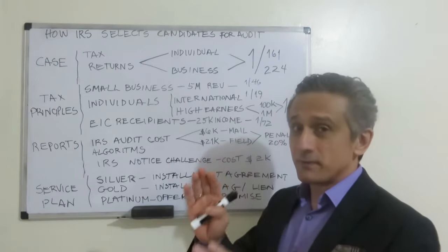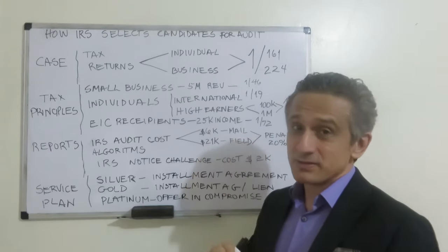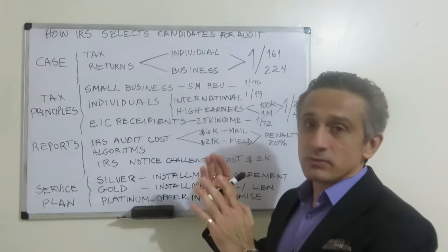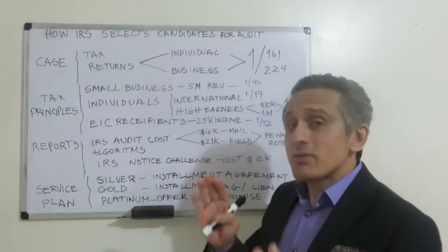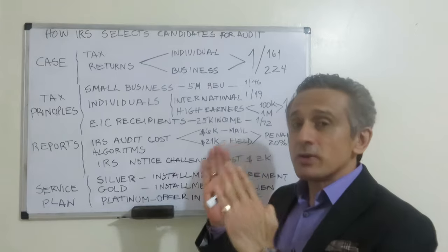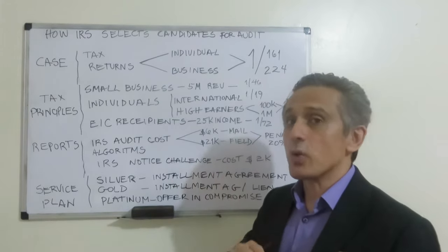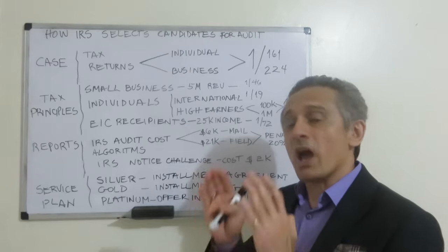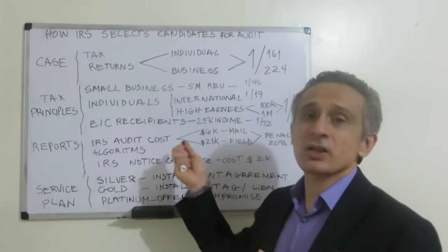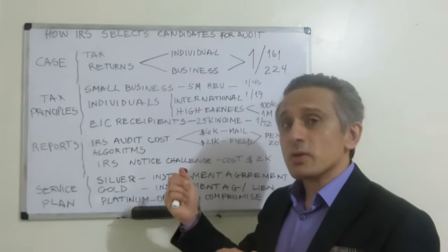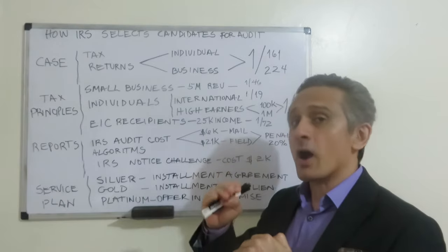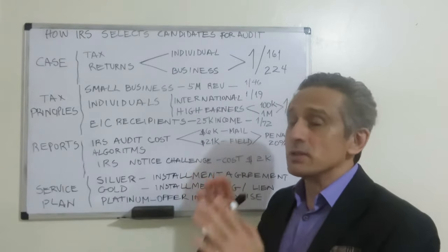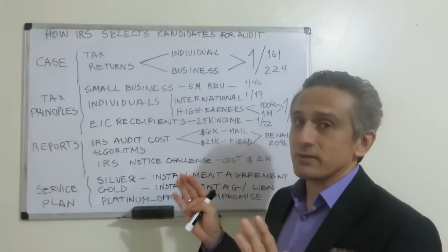There is a specific average created per industry for businesses that claim expenses and income, and also for individuals when they report their income to the IRS. Whenever a tax return is received, the income is compared to the industry average and the expenses are also compared to the average according to the statistical system. When the taxpayer's expenses are not on the average, or are far from the average, the IRS will decide who is going to be audited based on that system.